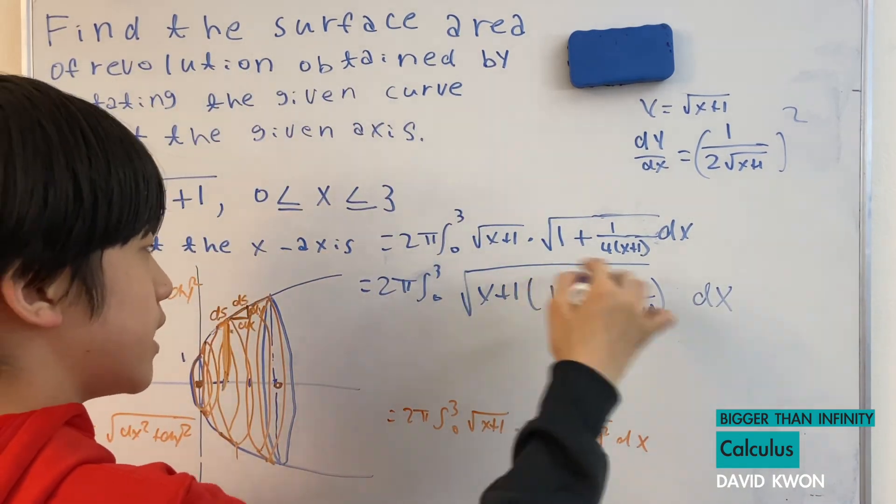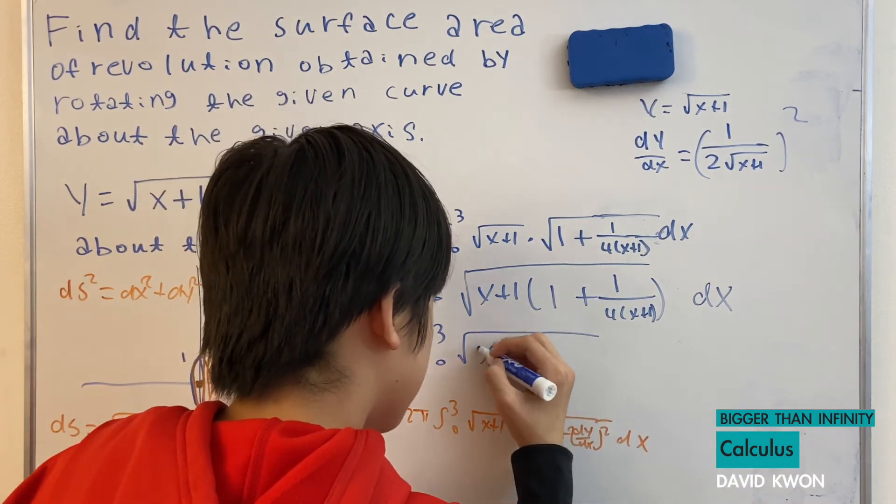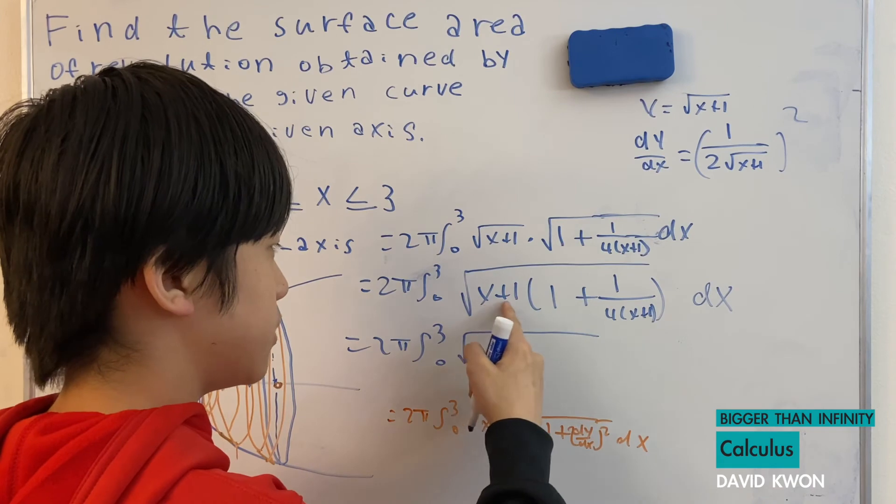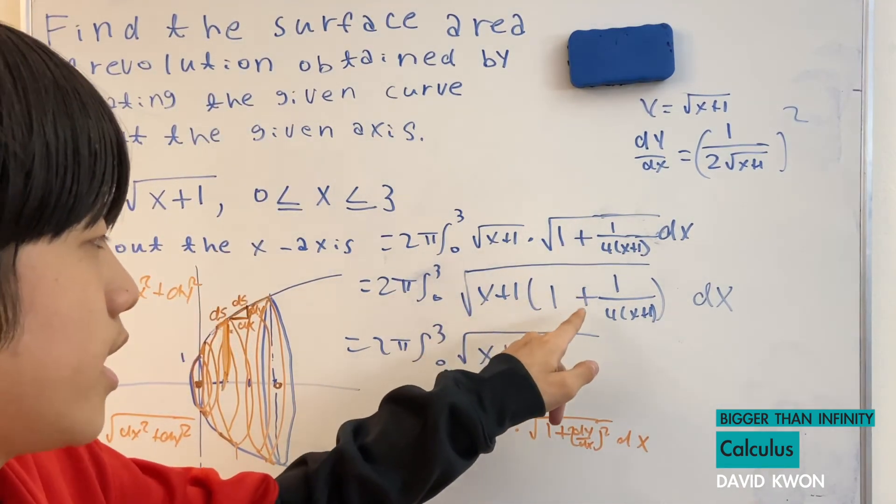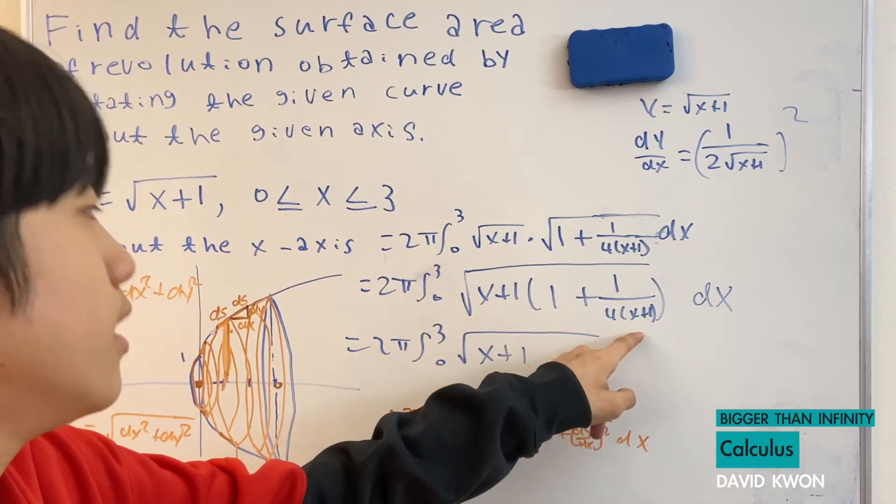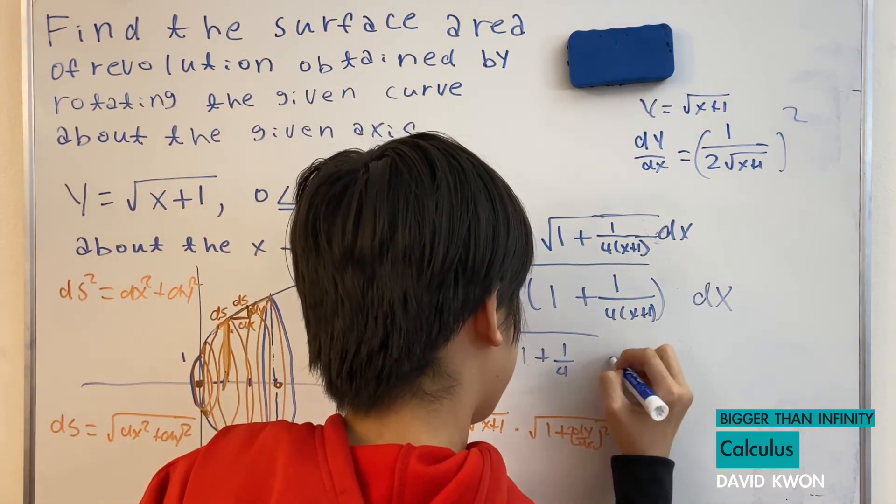And now let's work in the inside of this. x stays the same, but... No, wait, no. x plus 1 because x plus 1 times 1 is just x plus 1. But x plus 1 times 1 over 4 times x plus 1. x plus 1 and the x plus 1 cancels out, leaving only plus 1 over 4. Like this.